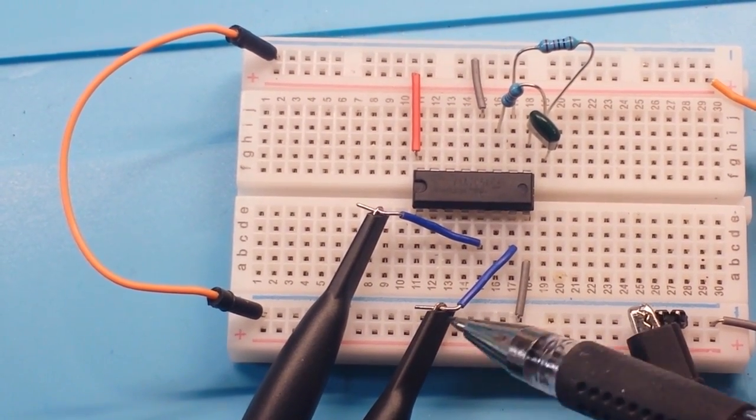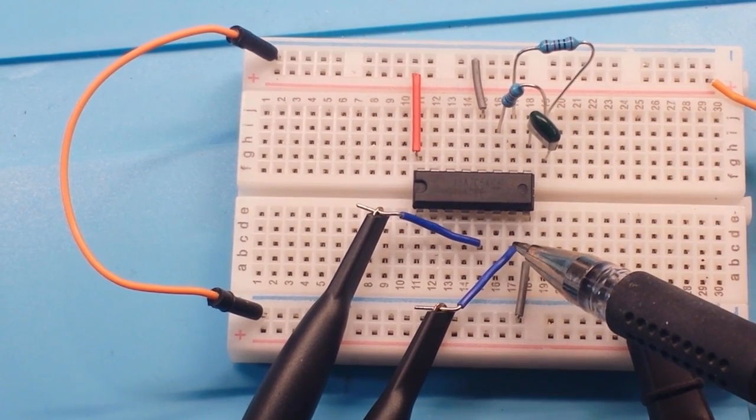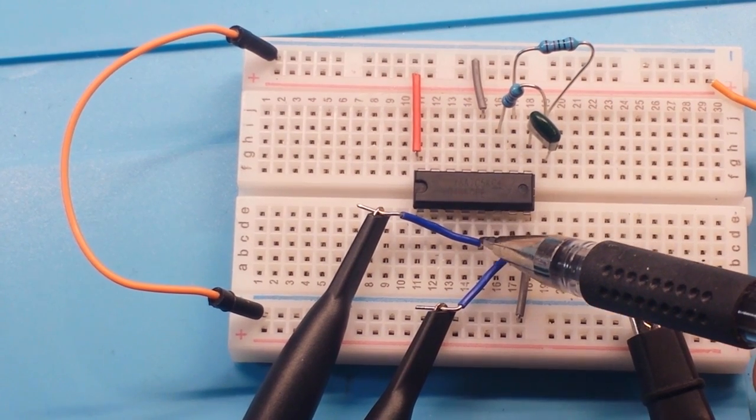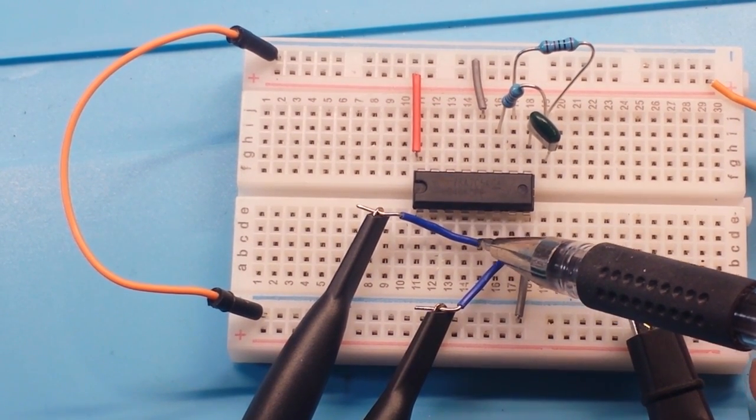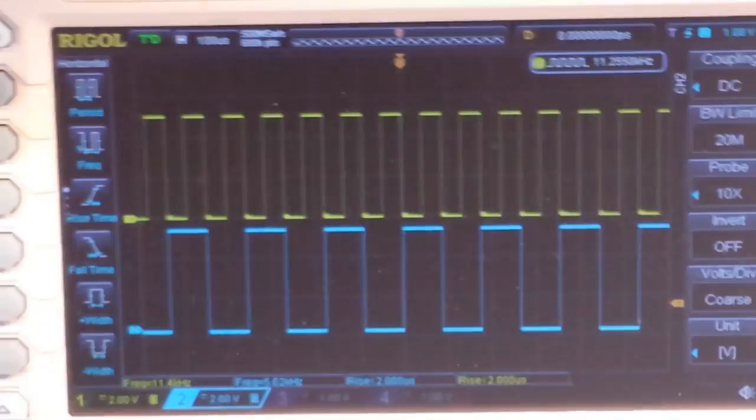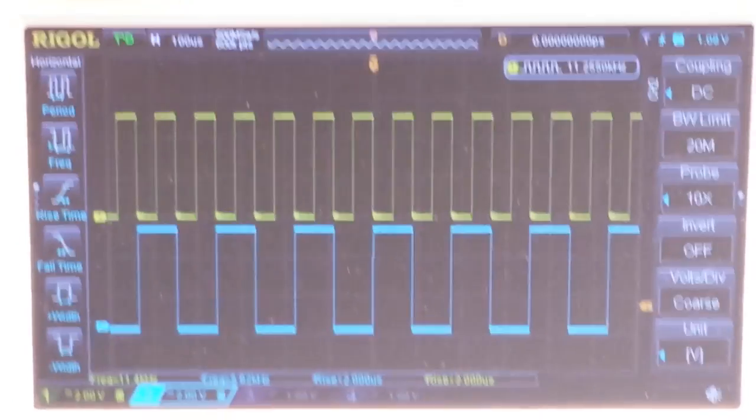Now, before we go to the scope, channel 1 of the oscilloscope here is on output 7, which is the divide by 16. And channel 2 is on output 5, which is the divide by 32. So those are our first two. And we can take a look at it. Boom. There we go.